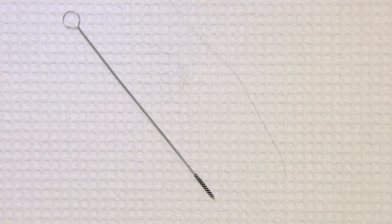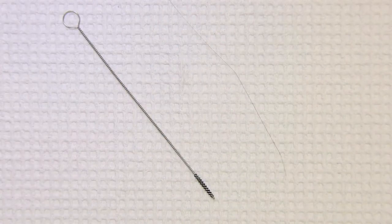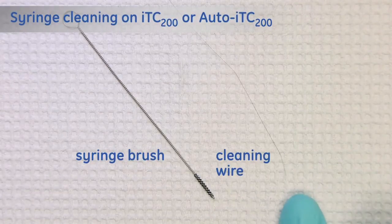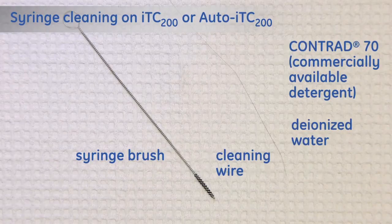To perform this procedure on MicroCal ITC 200 or Auto ITC 200, you will need a syringe brush, a cleaning wire, a mixture of Contrad 70, and deionized water.